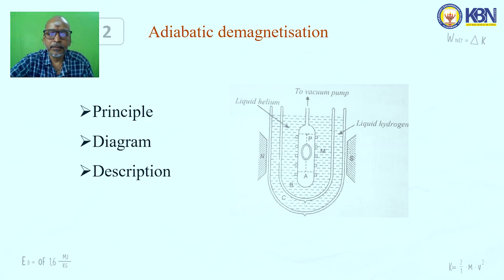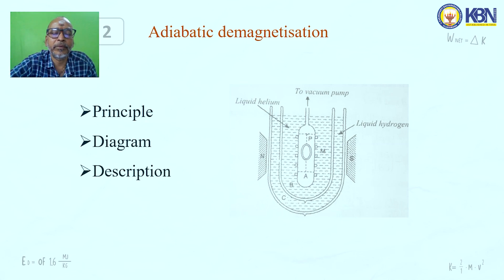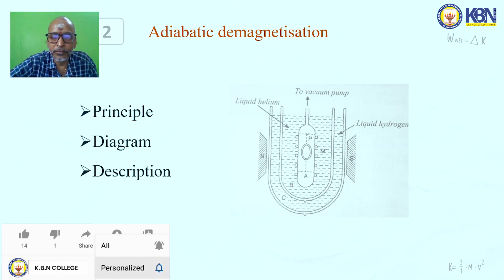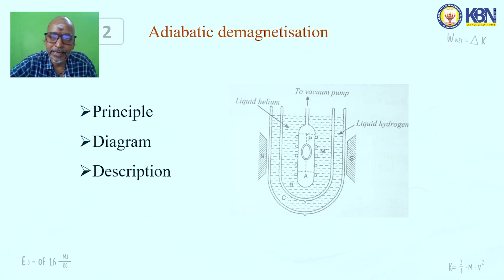Low temperature can also be created by the phenomenon of adiabatic demagnetization. This is studied under three separated principles: the diagram, its working, and the theory. The basic principle of creating low temperature by adiabatic demagnetization is: when a paramagnetic substance that is already magnetized is suddenly demagnetized, there is a fall in temperature — that is, a decrease in temperature.